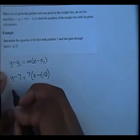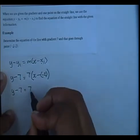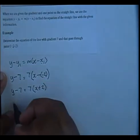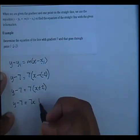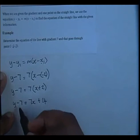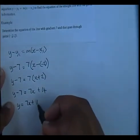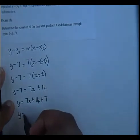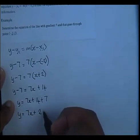Let's now simplify this expression. y minus 7 equals 7x — remember that ends up adding 14. So removing the brackets: y minus 7 equals 7x plus 14. Now this 7 has to move over, so y equals 7x plus 14 plus 7. Which means our final answer is y equals 7x plus 21.